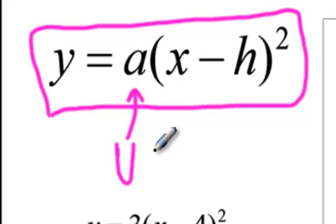If A is between 0 and 1, so if it's like 1 half or 1 fourth or 0.3, then the graph will look more wide. It'll still be a parabola, but it'll be wider. And A does not change where the vertex is. The vertex is going to stay the same no matter what A is.